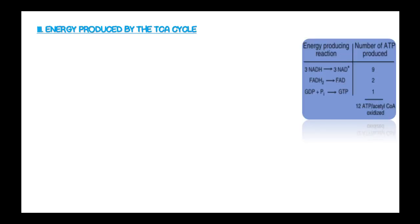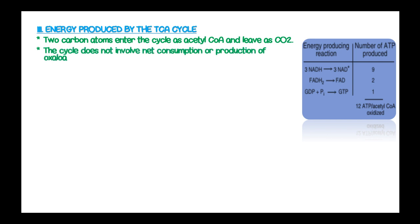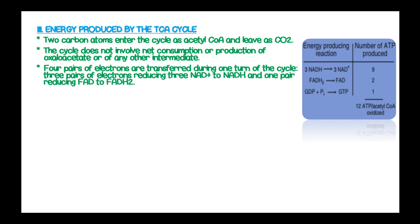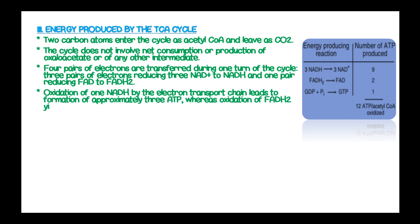The energy produced by the TCA cycle: two carbon atoms enter the cycle as acetyl-coenzyme A and leave as carbon dioxide molecules. The cycle does not involve net consumption or production of oxaloacetate or any other intermediates. Four pairs of electrons are transferred during one turn of the cycle — three pairs reducing NAD+ to NADH, and one pair reducing FAD to FADH2. Oxidation of NADH by the electron transport chain leads to formation of approximately three ATPs, whereas oxidation of FADH2 yields approximately two ATP molecules.